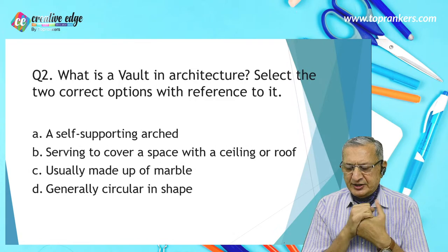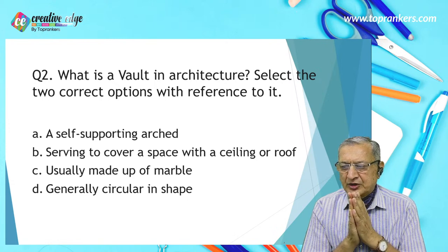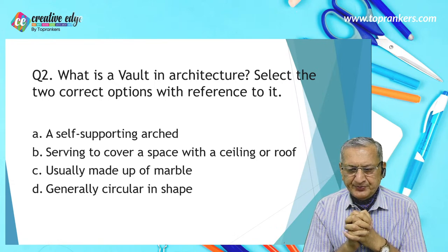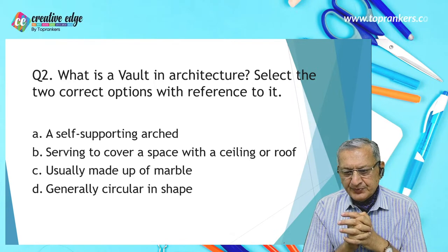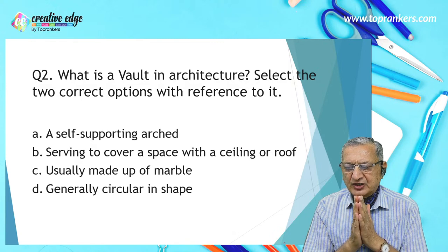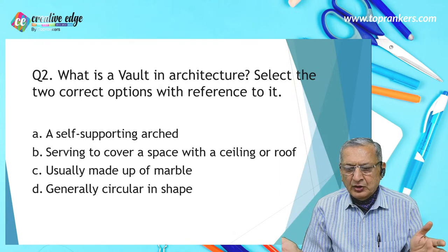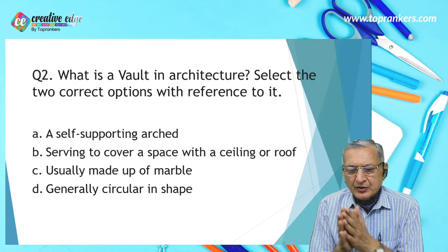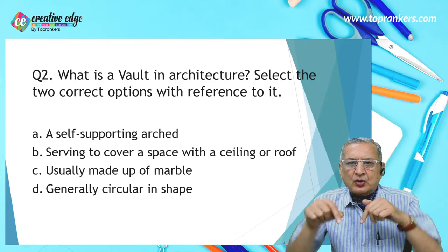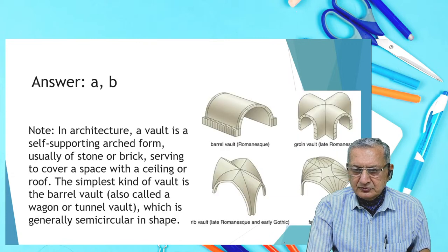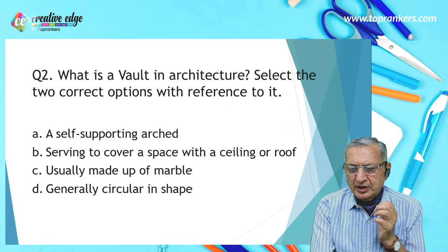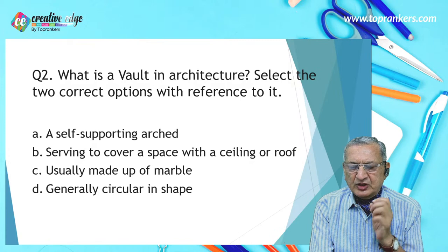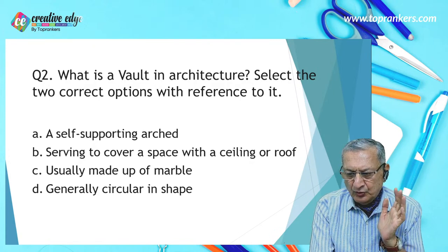What is a vault in architecture? Select the two correct options with reference to it. The options are: a self-supporting arched form serving to cover a space with a ceiling or roof; usually made of marble; generally circular in shape. The answer is A and B — a self-supporting arch serving to cover a space with a ceiling or roof are the correct answers.